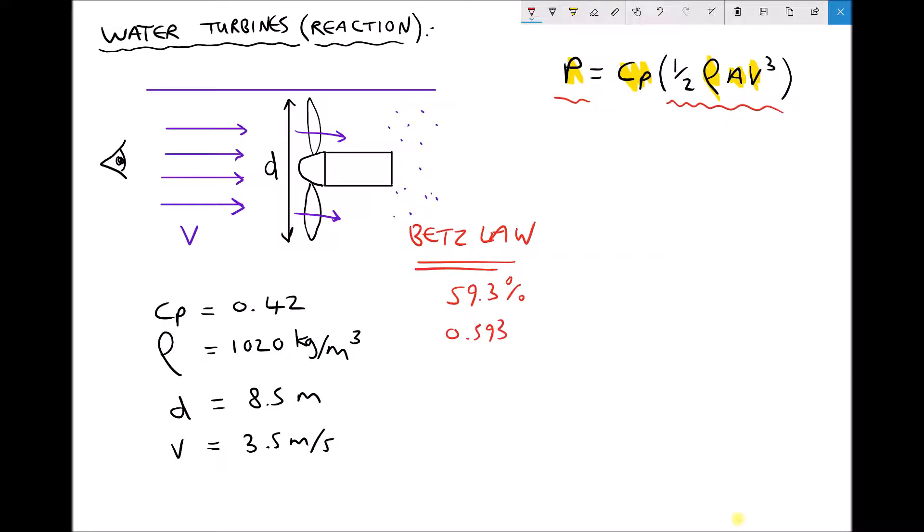Now if that's the case, the value of Cp, the coefficient of power, can never exceed 59.3% or 0.593. So in actual fact we tend to see relatively low values for this coefficient of power. In addition to Bett's limit of 59.3%, we also need to take into consideration the efficiency of the machine. So how efficiently does it convert fluid power to mechanical power, and how efficiently does it convert mechanical power to electrical power?